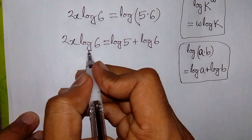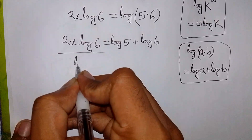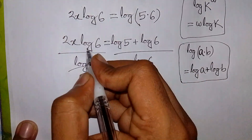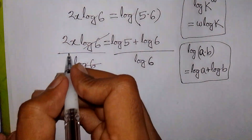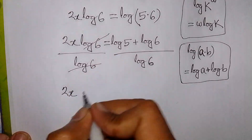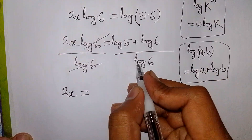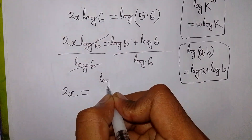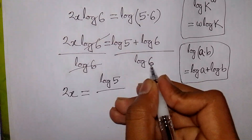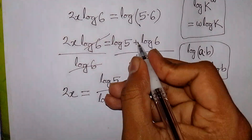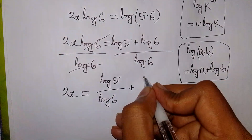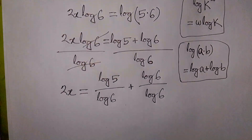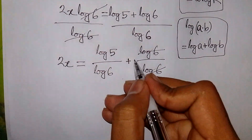Now we divide both sides by log 6. So 2x will be equal to log 5 over log 6, plus log 6 over log 6. This log 6 over log 6 will be cancelled, giving 1.